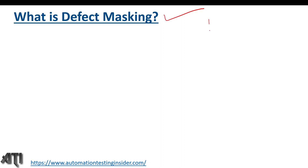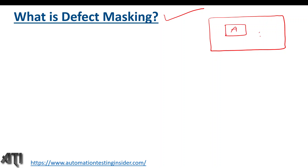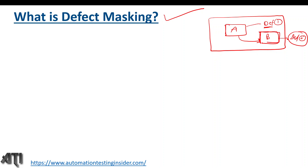Let's say we are testing any application and there is a functionality A which we are testing right now, and there is a related functionality called B. Functionality B is related with functionality A. There is a defect we found while testing functionality A, and there is also a defect in functionality B. Since we cannot execute functionality B without functionality A, defect 2 is a mask defect.